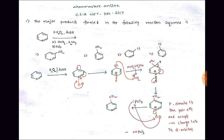For example, if we have ring-activating groups like a methoxide group — say at the second position of the pyridine ring — the lone pair of electrons on oxygen can donate into the ring. This leads to delocalization of pi bonds and the possibility of negative charge developing on the pyridine ring. That negative charge can then attack an electrophile, enabling electrophilic substitution reactions.